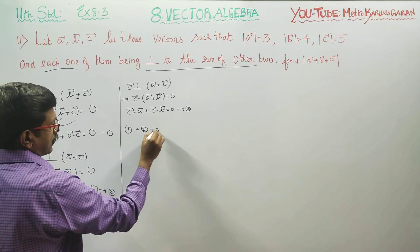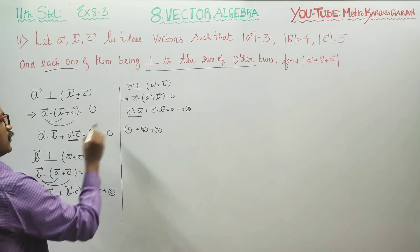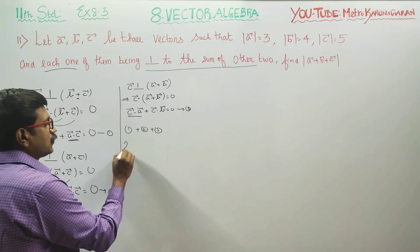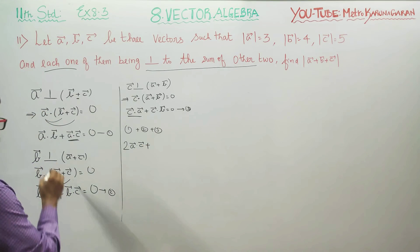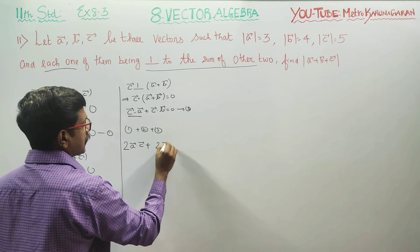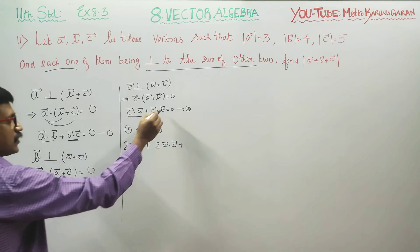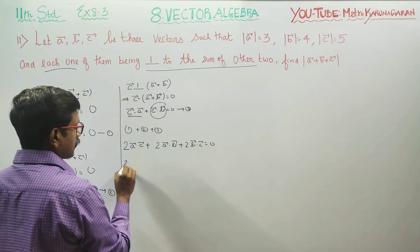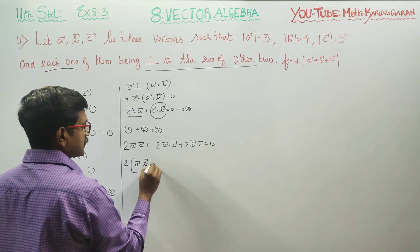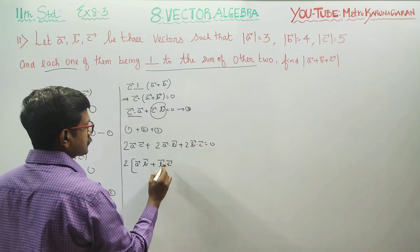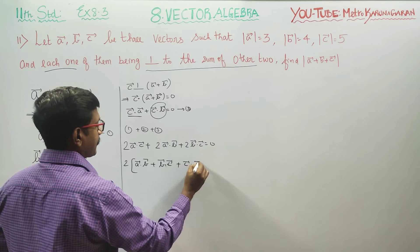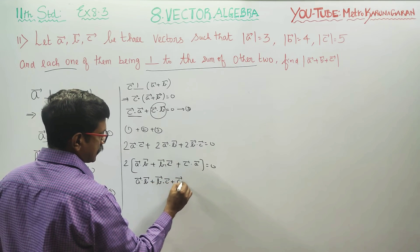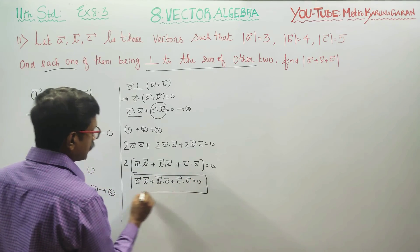I am going to add result number 1, 2, and 3. Dot product is always commutative. C dot A is equal to A dot C. I am going to add 2 A vector dot C vector, 2 times A dot B, plus B dot C, C dot B, plus B dot C. 2 full of common and you will be getting A dot B plus B dot C plus C dot A is equal to 0. 2 divide and A dot B plus B dot C plus C dot A is equal to 0. This is the result I have found.